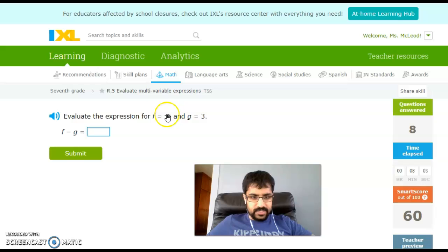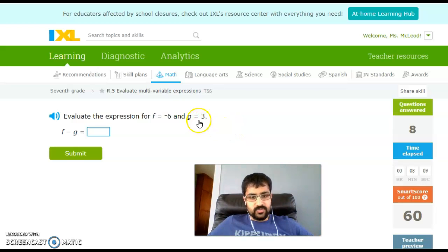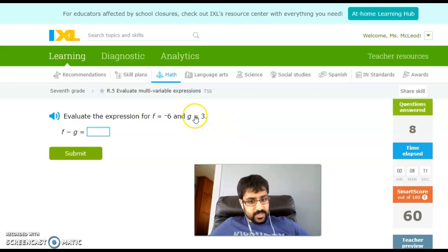So, aha, something has changed. This time we've got some integers. We've got a negative 6 for f and then a positive 3 for g. What we need to do here is make sure we apply the rules for integers, which you've had a lot of practice with already in class as well as some of you on iXL, but let's just make sure we can remember what to do.